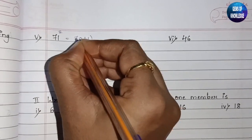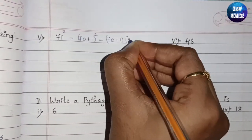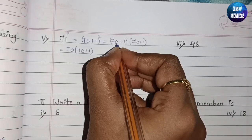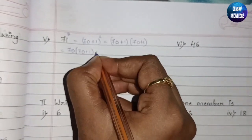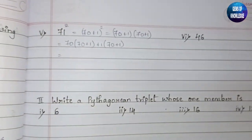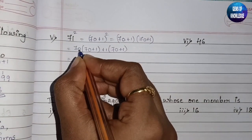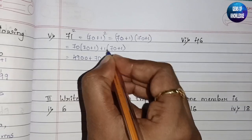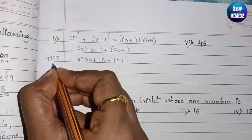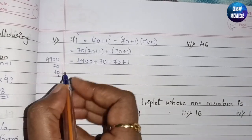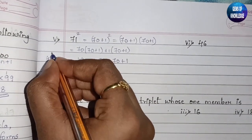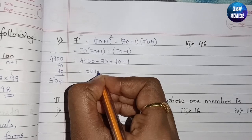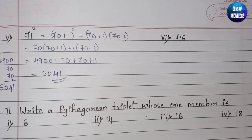The fifth question is 71². We write it as (70+1)², which equals (70+1)(70+1). Expanding: 70×70 = 4900, plus 70×1 = 70, plus 1×70 = 70, plus 1×1 = 1. Adding: 4900 + 70 + 70 + 1 = 5041. So 71² = 5041.